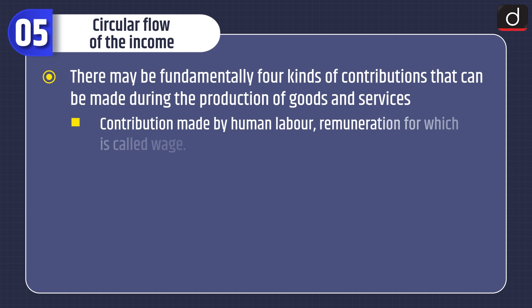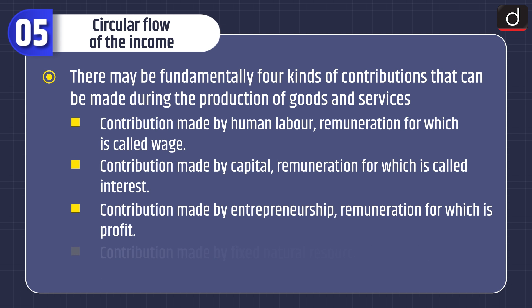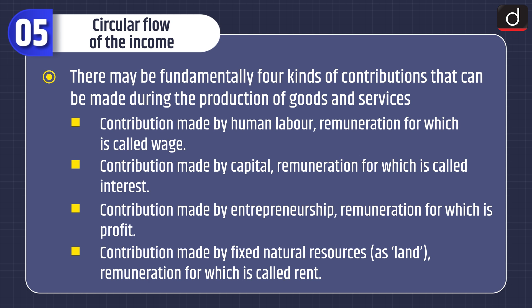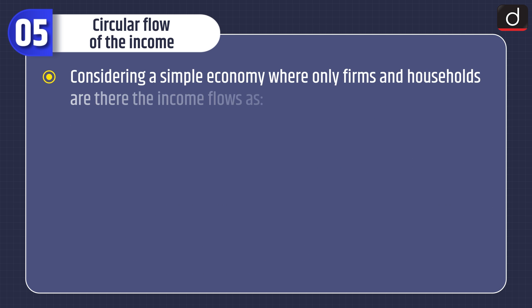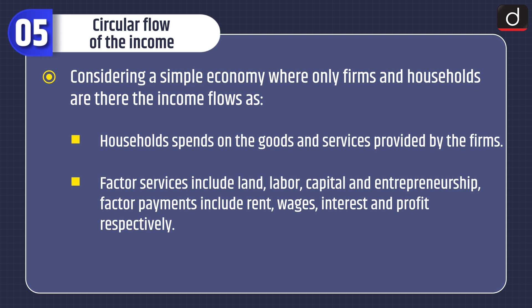Now lastly, let's discuss about circular flow of income. There may be fundamentally four kinds of contributions that can be made during the production of goods and services. Contribution made by human labor, remuneration for which is called wage. Contribution made by capital, remuneration for which is called interest. Contribution made by entrepreneurship, remuneration for which is called profit. And contribution made by fixed natural resources such as land, remuneration for which is called rent. Considering a simple economy where only firms and households are there, the income flows as households spend on the goods and services provided by the firms, and factor services include land, labor, capital and entrepreneurship, with factor payments being rent, wages, interest and profit respectively.